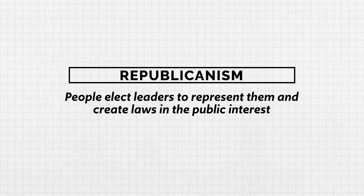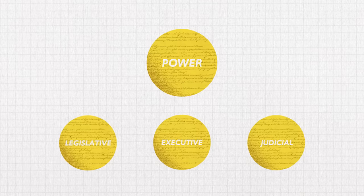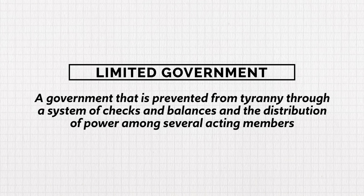The third Enlightenment idea is republicanism. In a republican form of government, people elect leaders to represent them and create laws in the public interest. To keep this government from becoming tyrannical, power ought to be separated between three branches: the executive, the legislative, and the judicial. Taken together, all these Enlightenment ideas point to the best form of government being a limited government — one prevented from tyranny through checks and balances and the distribution of power among several acting members.